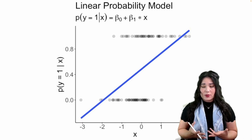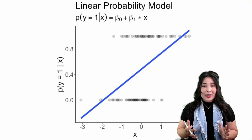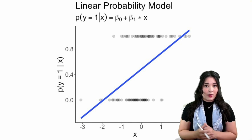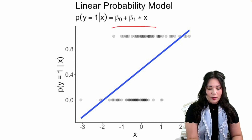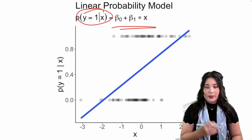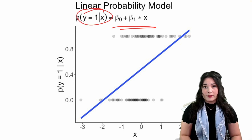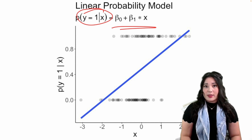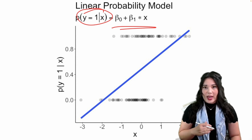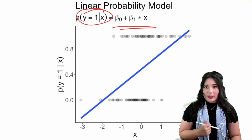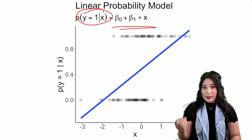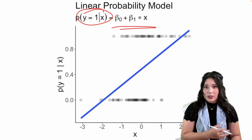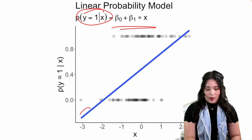One thing we could do is not logistic regression, but something called a linear probability model — though I'll tell you up front, this is typically not a great idea. A linear probability model does what it suggests: it's a linear regression model that predicts the probability of a data point being in category one. One problem we see right away is that it can predict impossible probabilities — values that are below zero or above one — and that can be pretty problematic.